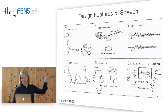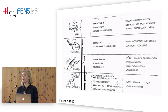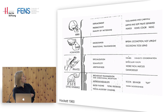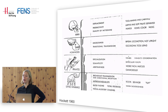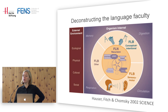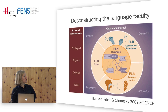Hockett also tried to map some of these abilities onto an evolutionary tree to make claims — for instance, he believed that hominoids already had traditional transmission, meaning vocal learning. There are also more recent approaches, including a very influential paper by Mark Hauser, Tecumseh Fitch, and Noam Chomsky, who attempted a much broader review deconstructing the language faculty.